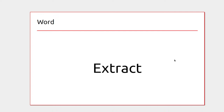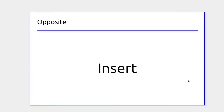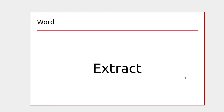A surgeon might have a patient with an inflamed appendix, looking to extract it and take it out of the body. The other option would be to insert — in that situation they might be inserting a titanium hip, putting something into the body.